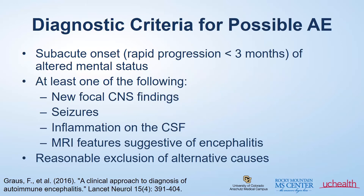Here are the clinical criteria for possible autoimmune encephalitis. Diagnosis can be made when all three of the following criteria have been met. This includes subacute onset, meaning the symptoms come on relatively quickly and progress quickly over the course of three months, of altered mental status — defined as memory and cognitive issues or personality change. In addition to memory issues, there can be other abnormal findings in one's neurologic exam, including at least one of the following: a new focal neurologic deficit, seizures, or supportive measures such as inflammation on the spinal fluid and MRI findings.